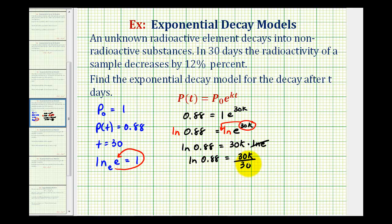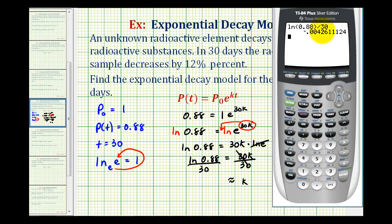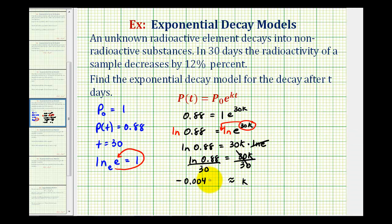To find the decay rate we'll divide both sides by 30. We want to include quite a few decimal places for accuracy. So k = ln(0.88) / 30. Using six decimal places, k ≈ -0.004261. This means the exponential decay model for this situation is p(t) = p₀ · e^(-0.004261t), where t is the time in days.